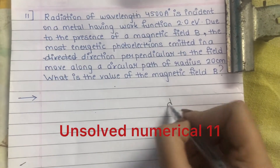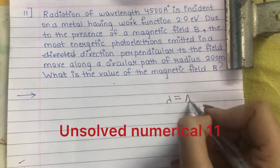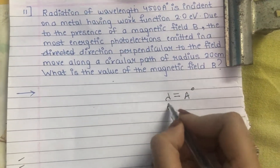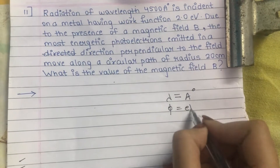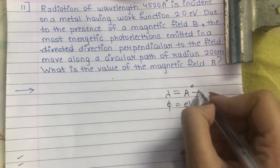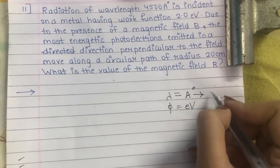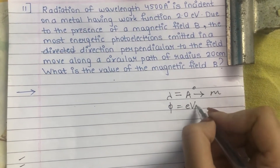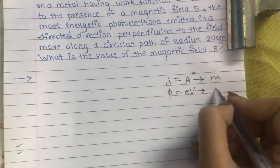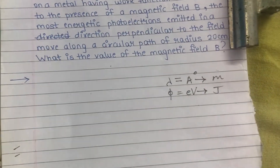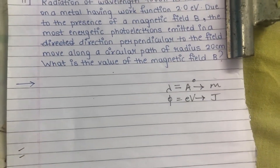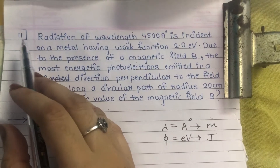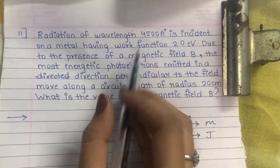One more thing: if wavelength is in angstrom, work function should be in electron volt. If wavelength is in meter, work function should be in joule. Remember this. Starting with numerical number 11.